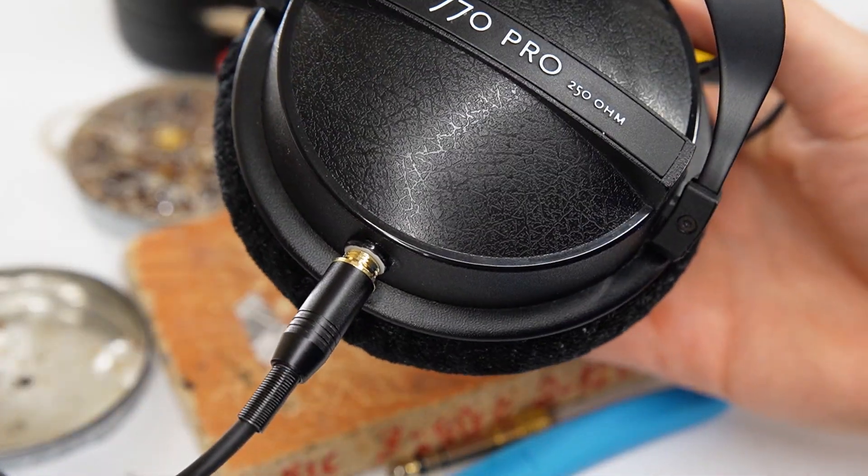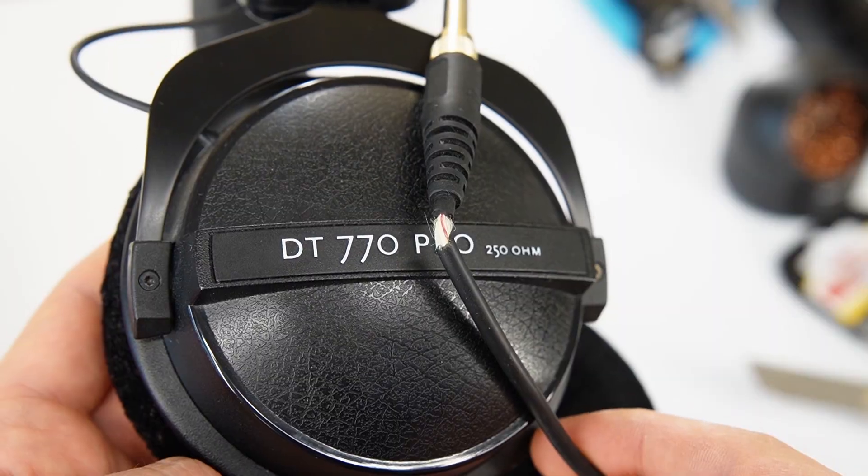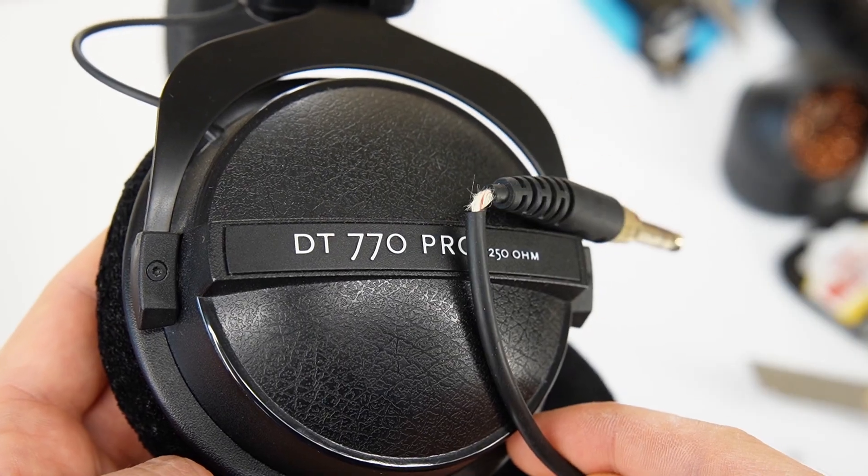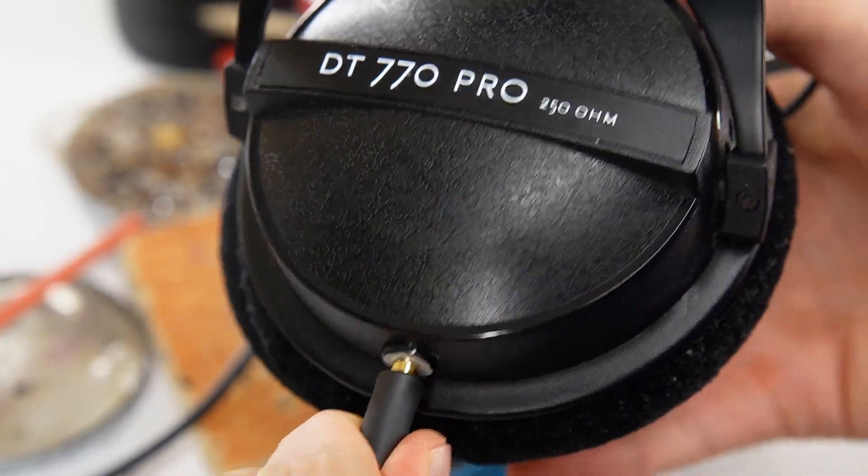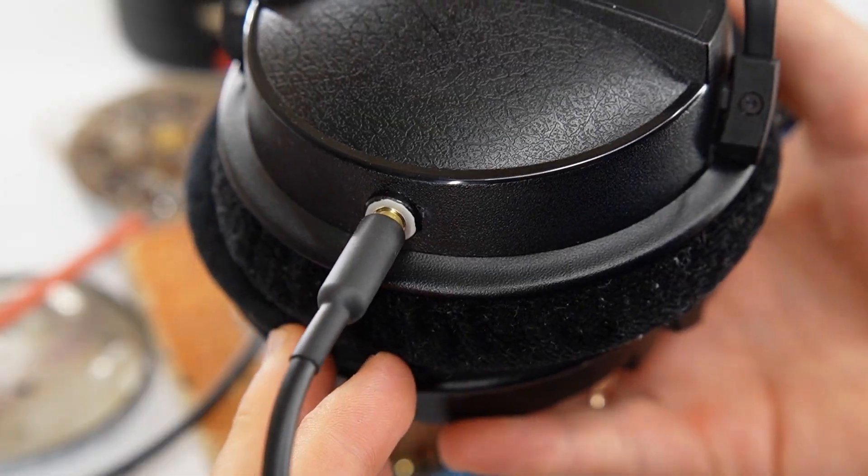With this mod, your headphones get a removable cable so you can forget about broken 3.5mm jacks and cable repairs. Just plug in a new cable and enjoy your headphones, while saving money instead of buying new ones.